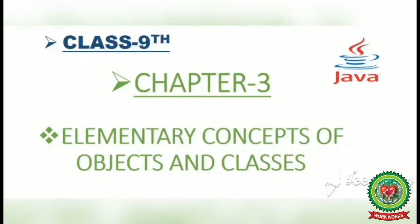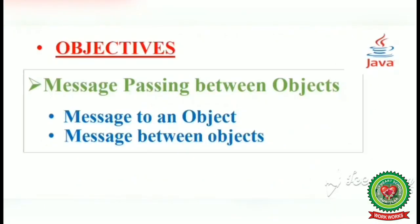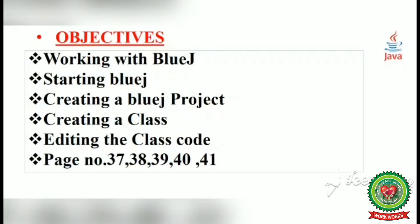Good morning students. Today we are going to discuss Class 9th Chapter 3: Elementary Concepts of Objects and Classes. As in the last video we discussed message passing between objects — how objects communicate with each other — today we are going to discuss working with BlueJ: starting BlueJ, creating a BlueJ project, creating a class, and editing the class code. We will discuss these objectives through page numbers 37 to 41.